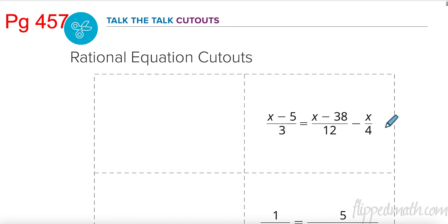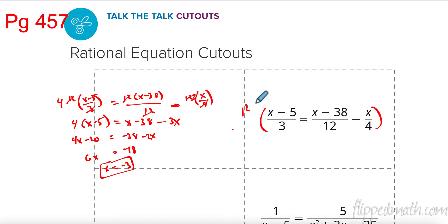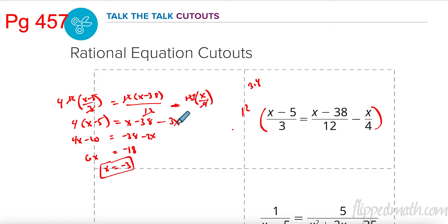Go to page 457 — pause the video and try the first one. I multiplied everything by 12 because 12 cancels the 12, and 12 is 3 times 4 so it cancels the 3 and the 4. Multiplying here I have 4 times the quantity x minus 5. The 12s cancel and I have x minus 38. 4 goes into 12 three times, 3 times x is 3x. Combining: x minus 3x is negative 2x, added with 4x gives 6x, added 20 gives negative 18, and x equals negative 3.